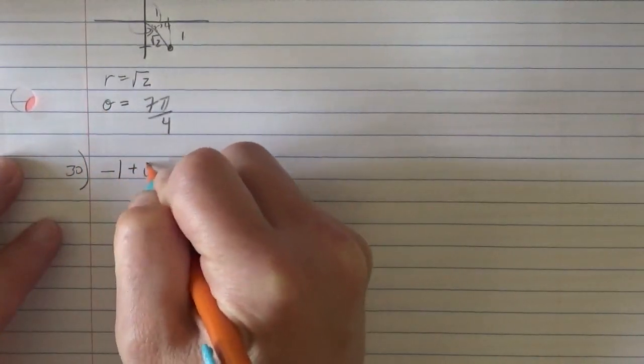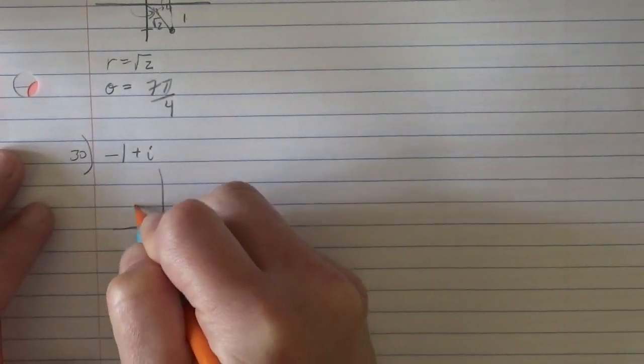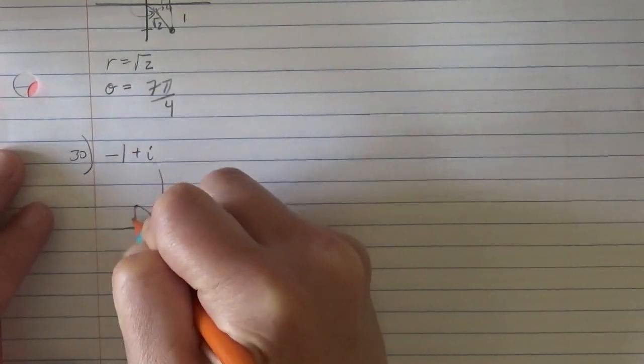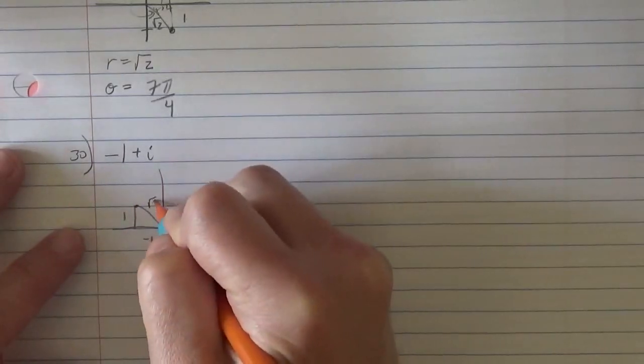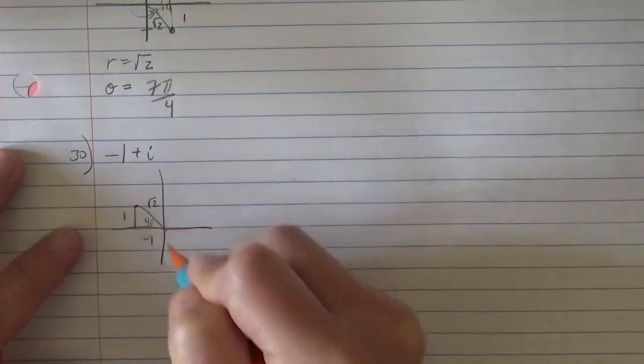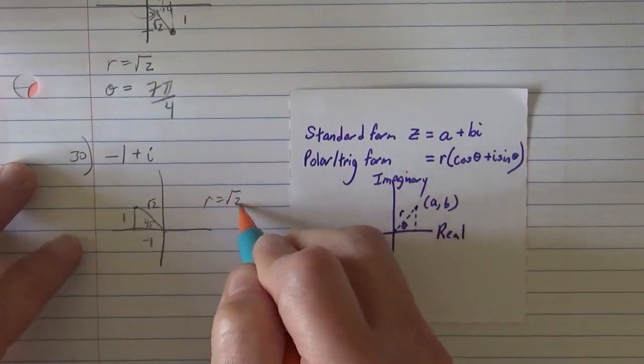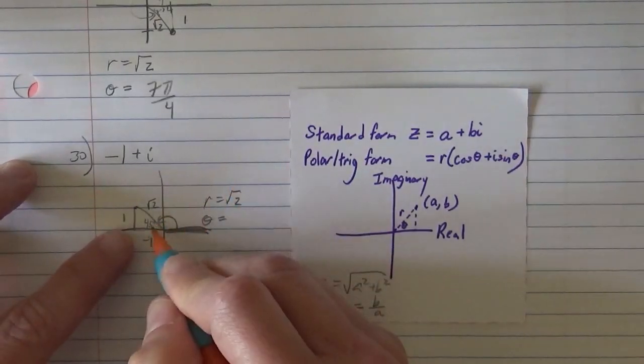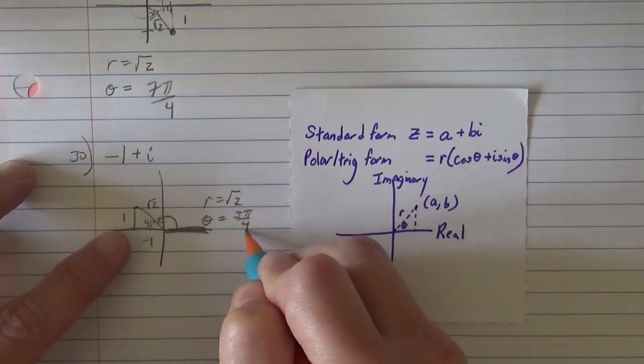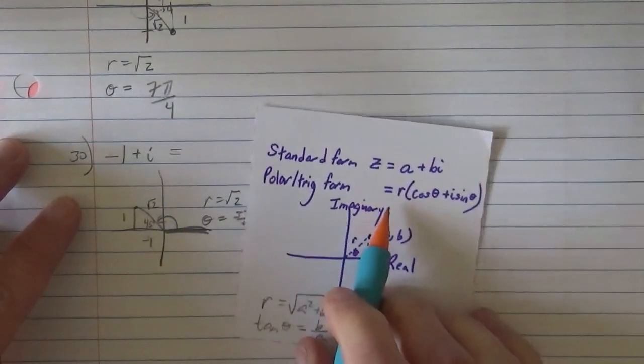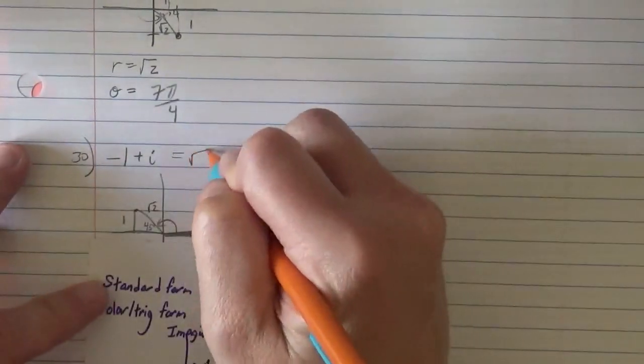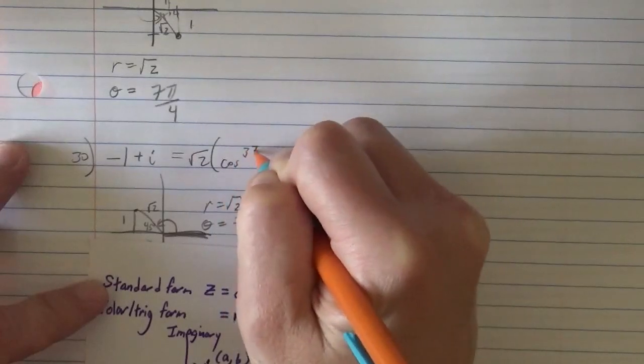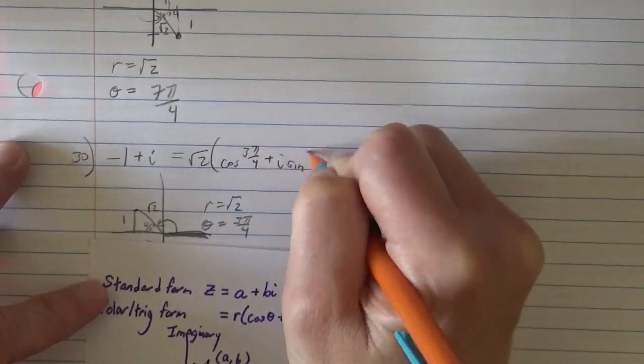And we keep going. So if we do 30, they have negative 1 plus i. So we're negative 1 on the real, 1 on the imaginary. So negative 1 on the real, 1 on the imaginary. And again, they picked something that we know. So we can recognize this 1, 1 root 2, 45 degree triangle. So we can tell that my r is going to be root 2, and my theta is going to be from the positive x axis always. So the radian form of this would be 3 pi fourths. So I can write it as r cosine theta plus i sine theta. So root 2 cosine 3 pi fourths plus i sine 3 pi fourths.